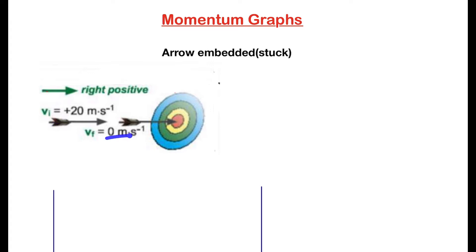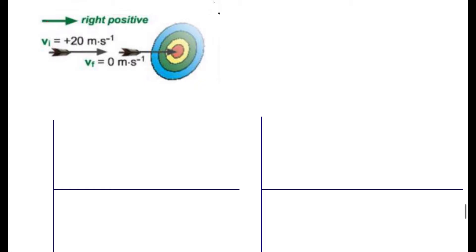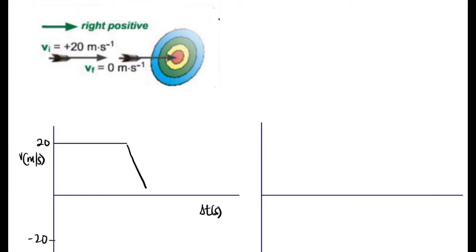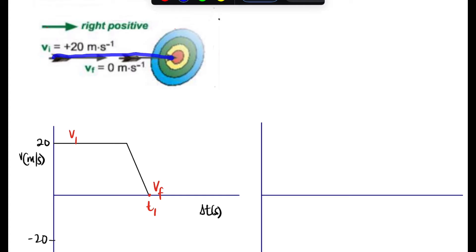So the initial velocity is 20 and the final velocity is zero. On a velocity-time graph, the initial velocity is plotted at 20. As the arrow moves and then gets stuck in the target, its velocity decreases to zero. The time it takes to go from the initial velocity of 20 down to the final velocity of zero is labeled t1.